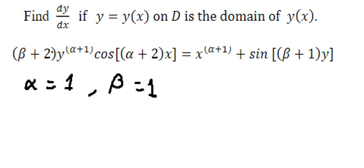We put the numbers in here and we get 3y squared cosine 3x is equal to x to the power of 2 plus sine 2y.